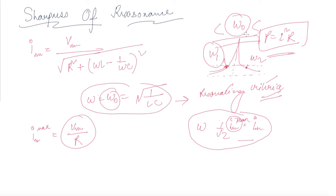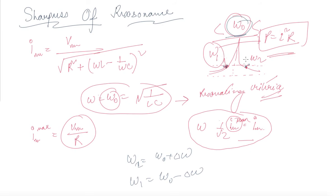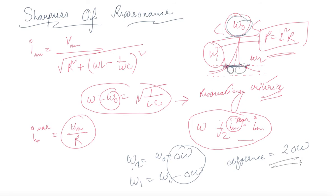Let omega_2 be greater than omega_naught and omega_1 be less than omega_naught. We write omega_1 as omega_naught minus del_omega, and omega_2 as omega_naught plus del_omega. The difference between the two values is twice del_omega.